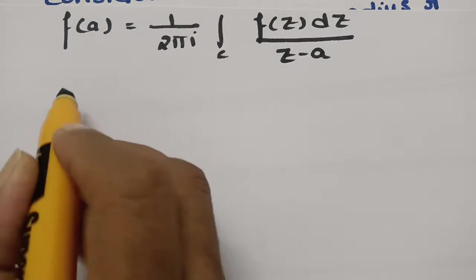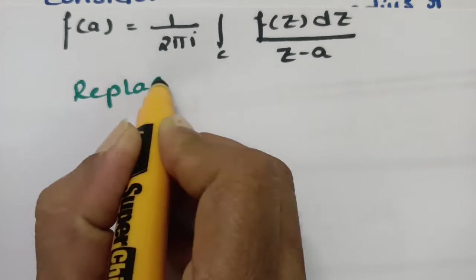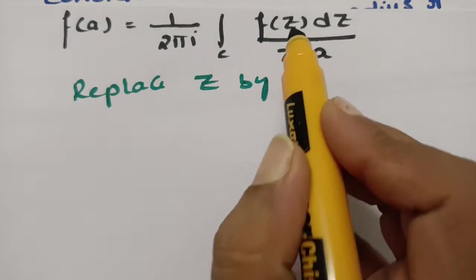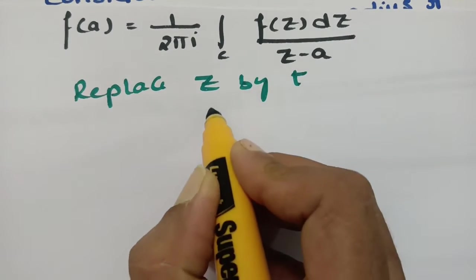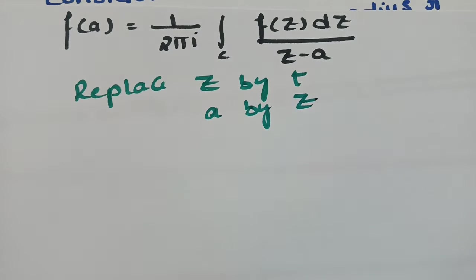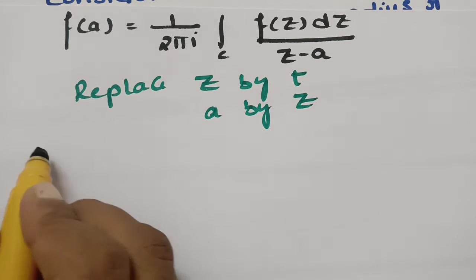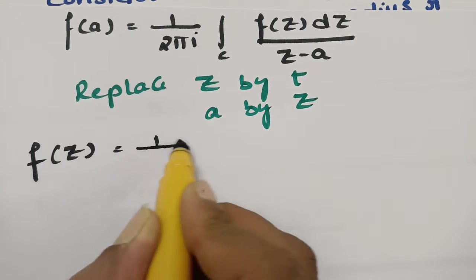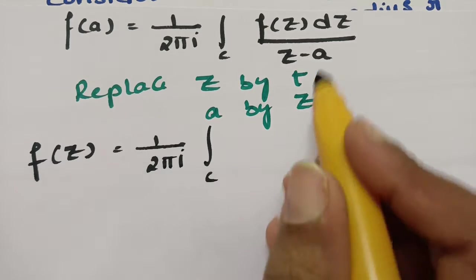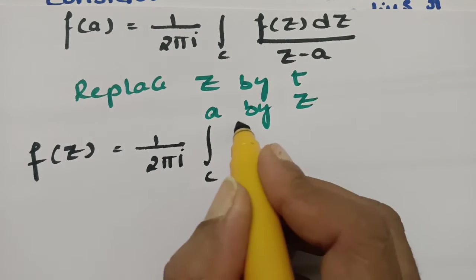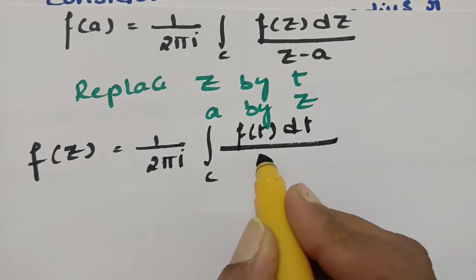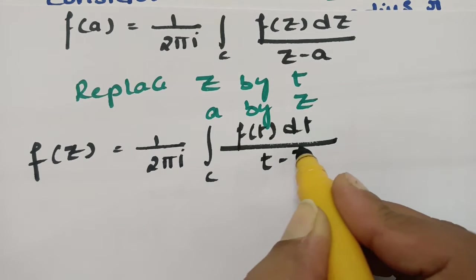In order to solve this, I am replacing z by t. So in place of z I am writing t, and in place of a I am replacing z. So f of z is equal to 1 by 2 pi i integral c. In place of z I am writing t, so this will be f of t dt by — in place of z I am writing t and in place of a, this is z.